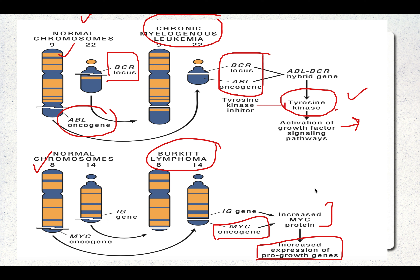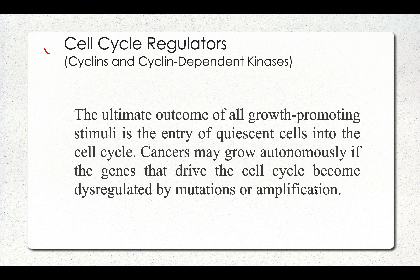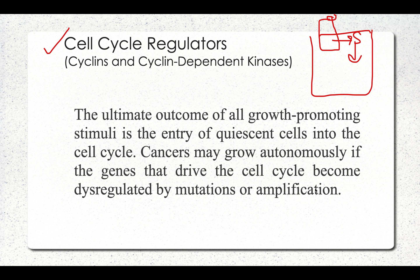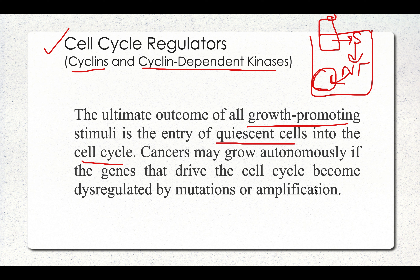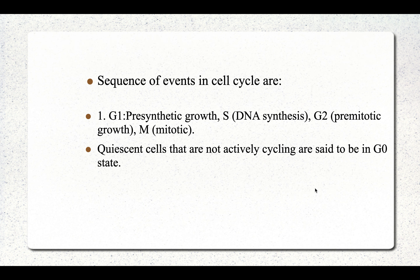Because tyrosine kinase is constitutively active in CML, tyrosine kinase inhibitors are used in these patients with good response. The last oncogene category is cell cycle regulators. The ultimate outcome of all growth-promoting stimuli is entry of quiescent cells into the cell cycle. Cancers may progress autonomously if the genes that drive the cell cycle become mutated or amplified. Cell cycle regulators include cyclins and cyclin-dependent kinases.